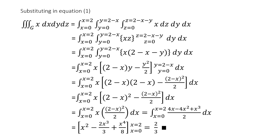After obtaining the limits, substitute into the triple integral: integral from x=0 to 2, integral from y=0 to 2−x, integral from z=0 to 2−x−y of x dz dy dx. The first integral is with respect to z; since x is a constant, the integral of x dz = x·z evaluated from 0 to 2−x−y gives x(2−x−y). The next integral is with respect to y; x and (2−x) can be taken as constants, giving x[(2−x)y − y²/2] from 0 to 2−x.